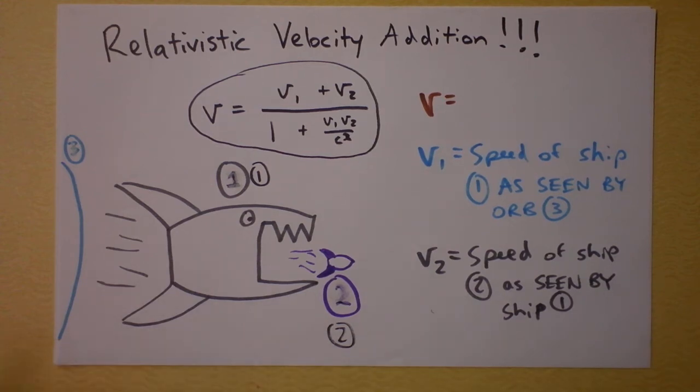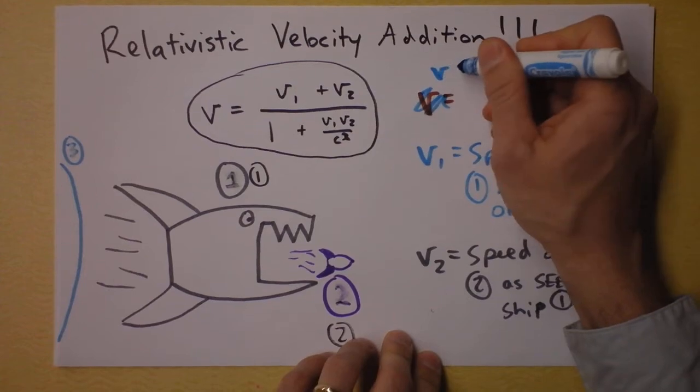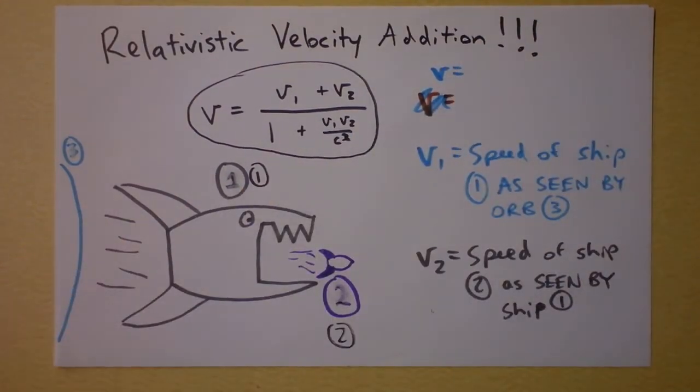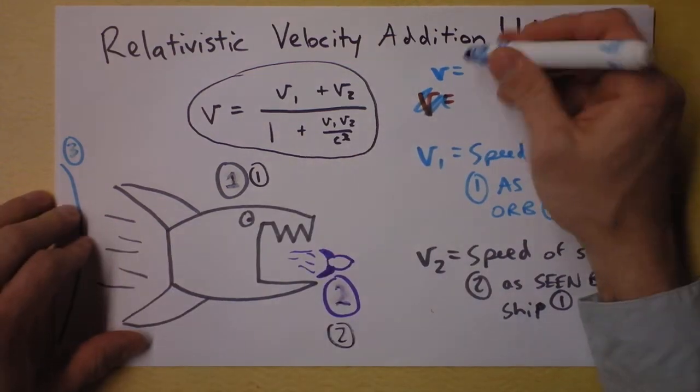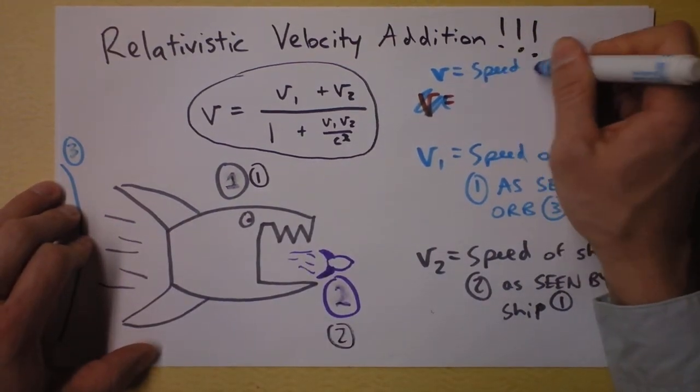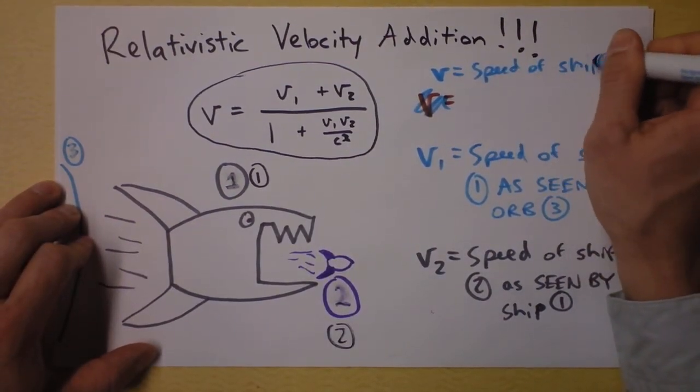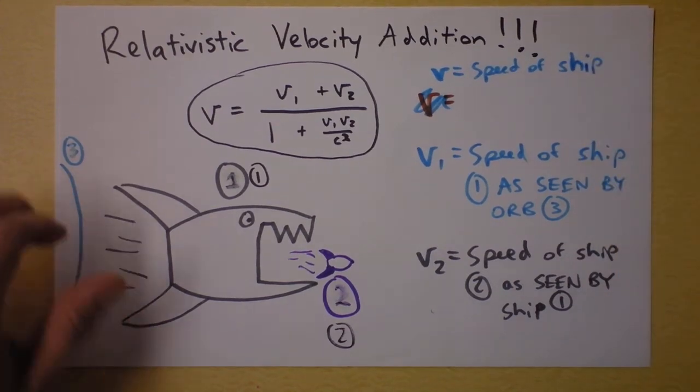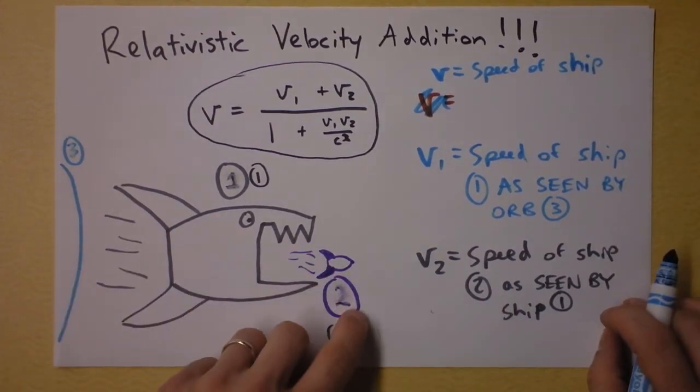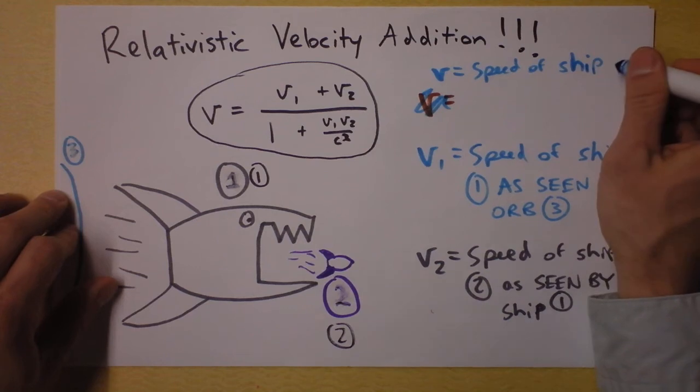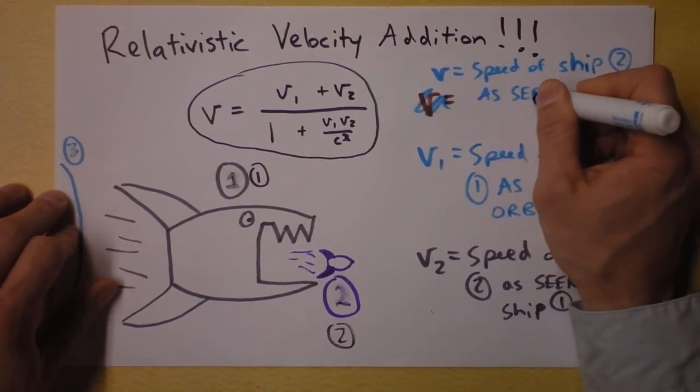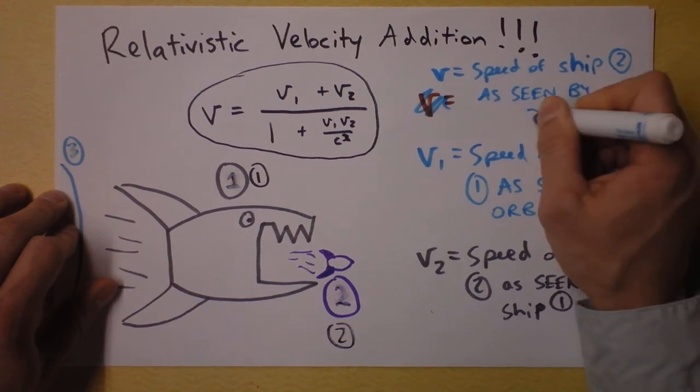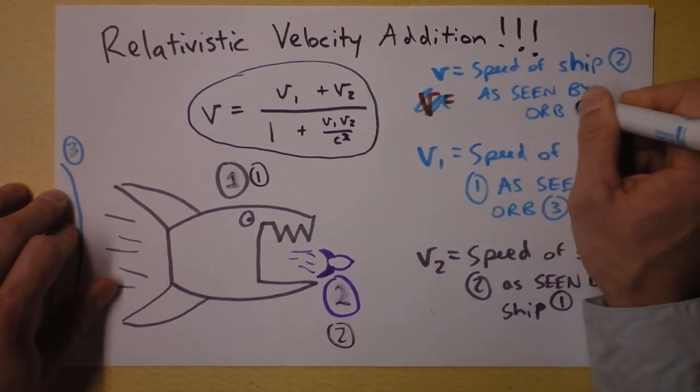Now, I'm going to go over here and consider, again, something that the orb would see. So I'm going to cross this out and say this is a blue velocity because V, this V with no subscripts, is the velocity—it's the speed of ship—you want to guess what I'm setting up here? Of course, it's going to be the speed of ship 2 as seen by the orb. Ship 2 as seen by orb 3. Okay,